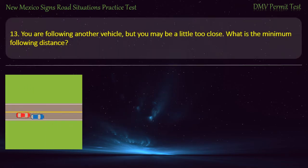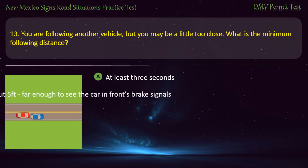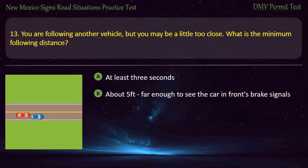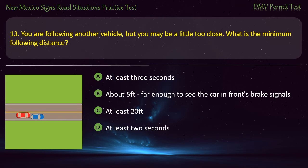Question 13. You are following another vehicle but may be a little too close. What is the minimum following distance? Options: At least three seconds; about five feet; far enough to see the car in front's brake signals; at least 20 feet; or at least two seconds. Answer: At least three seconds.